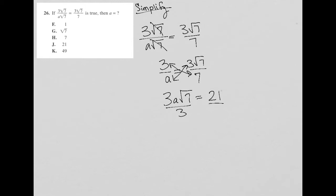I can divide both sides by three. So I get a square root seven equals seven. And then I can divide both by root seven, which I guess I could have done here and saved a step. But that's fine.